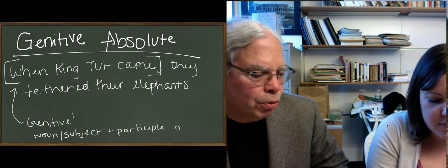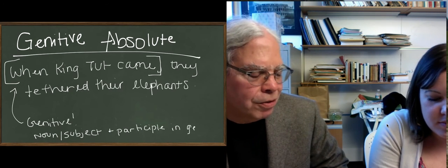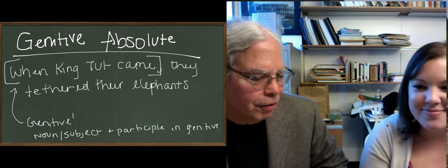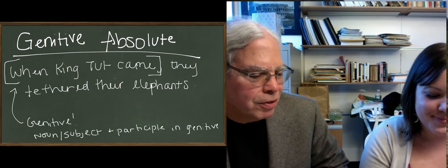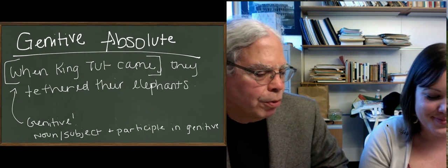It can be genitive singular or genitive plural, depending upon whether it's one King Tut or several horses or princes. When the princes came, then you'd have genitive plurals.